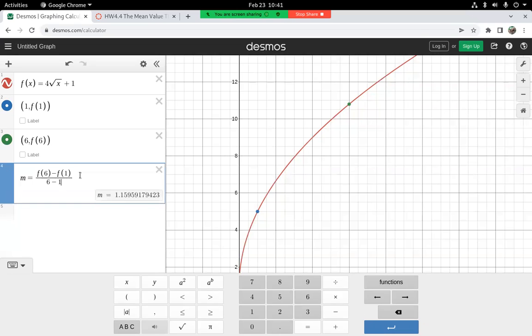And that is a fraction f of 6 minus f of 1 divided by 6 minus 1. All right. So that's our slope right there.